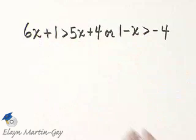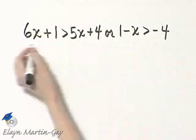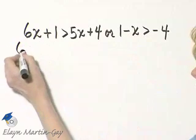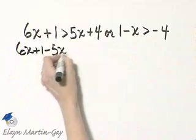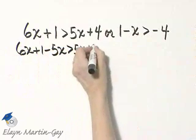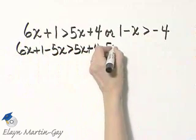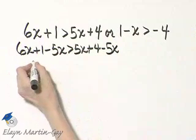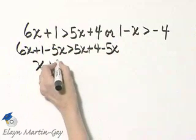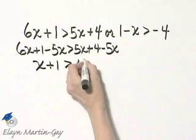Let's solve the first inequality. I will subtract 5x from both sides. So I'll have the left side, I'll subtract 5x. And the right side, I'll subtract 5x. Notice I have 6x minus 5x, which is x. So that's x plus 1 is greater than 4.